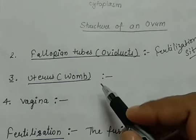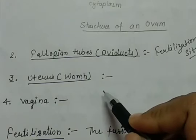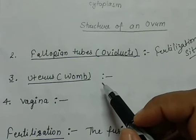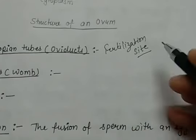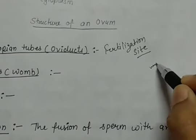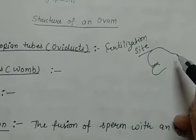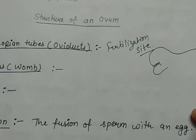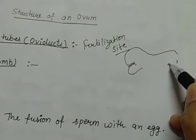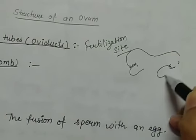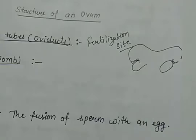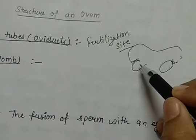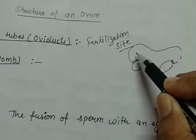The ovum released from the ovary enters the fallopian tube through its opening, which has finger-like projections — as we have seen in the diagram. On both sides there are finger-like projections connected with the ovary, and these finger-like projections help in the transfer of eggs from the ovary to the fallopian tube.